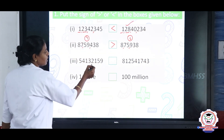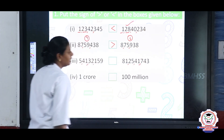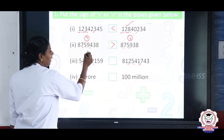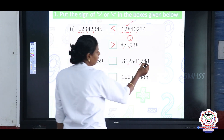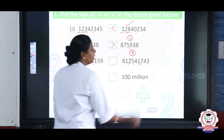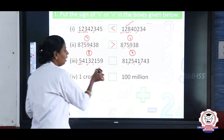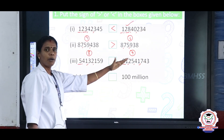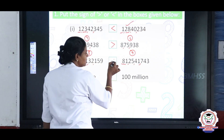The next question: place the commas and count how many digits. The first number has 8 digits and the second number has 9 digits. The number of digits varies — here it is 5 crore (8-digit) and there it is 81 crore (9-digit). Which is greater, the 8-digit or 9-digit number? The 9-digit number is greater.